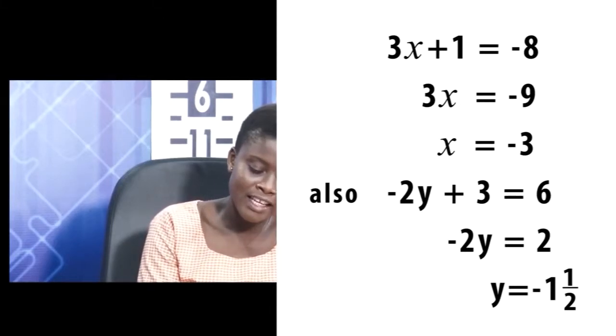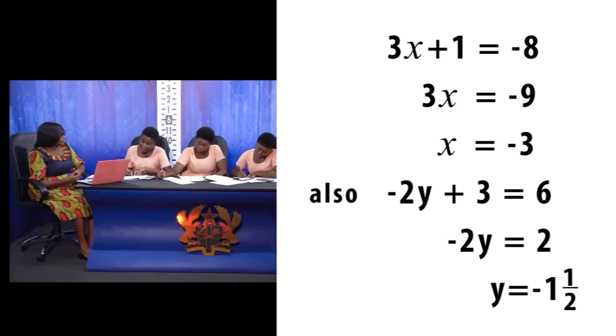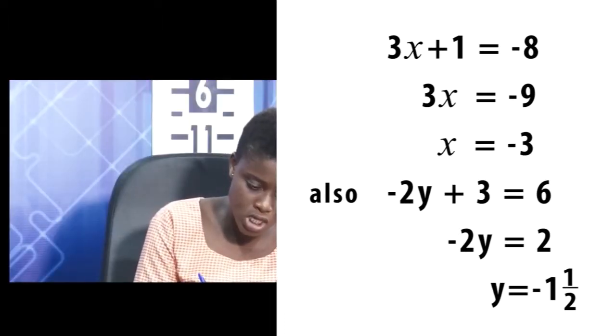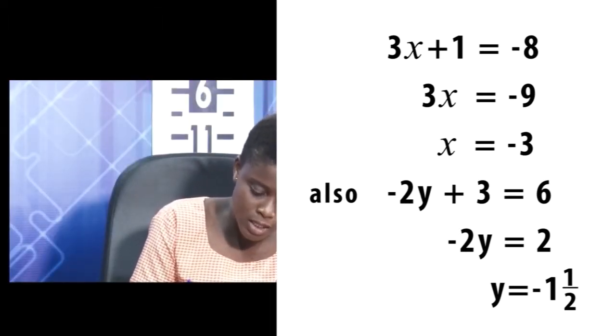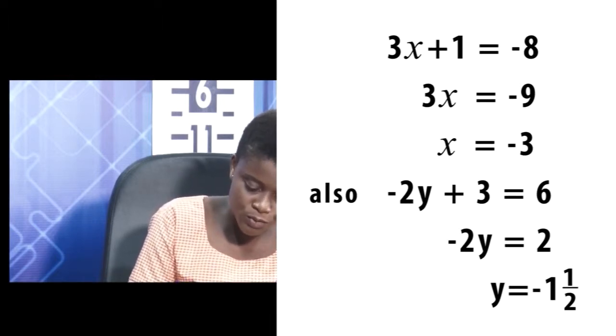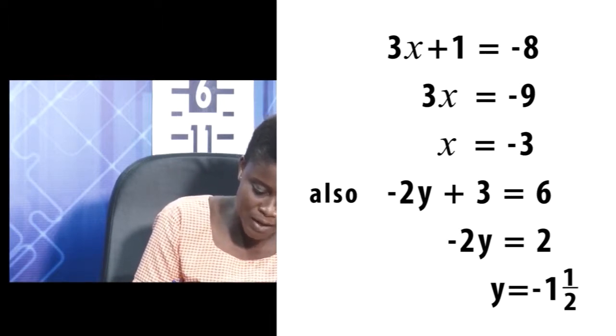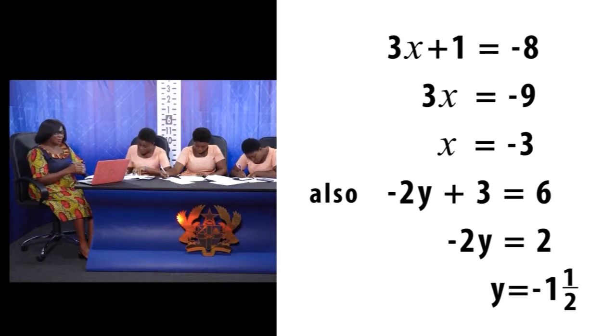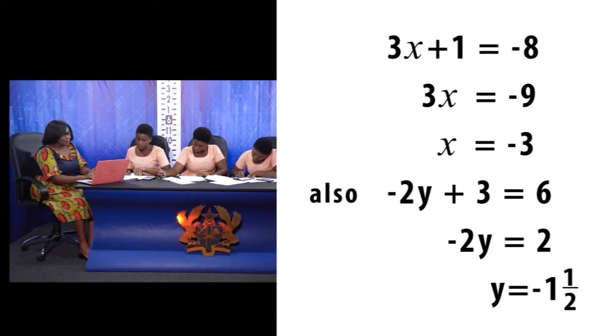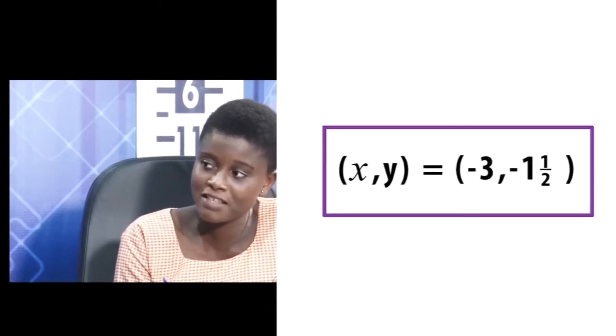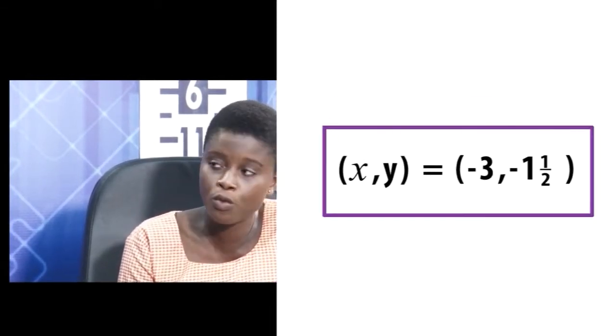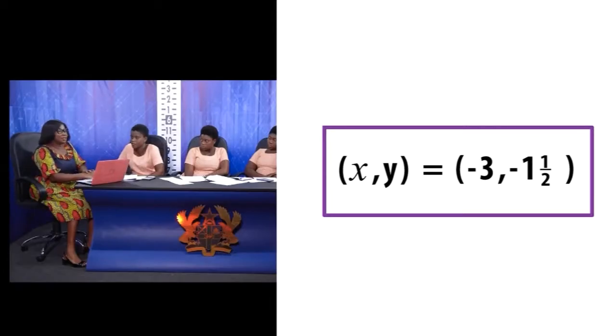Alright, please continue. And equating the Y component, I have here -2Y + 3 = 6, giving me -2Y = 2, and Y = -2/2, which is equal to -1½. Okay, negative 1 and half. Alright, so what do you do? How do you present your final answer? Therefore, the value of X is negative 3, and the value of Y is negative 1½. Okay. Thank you very much for that.